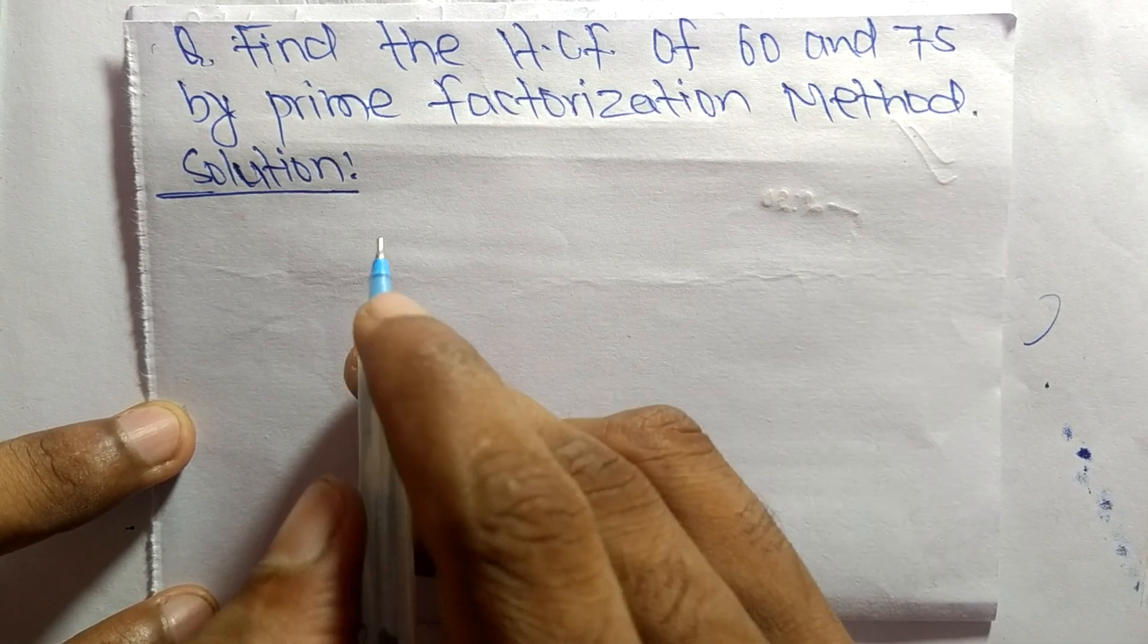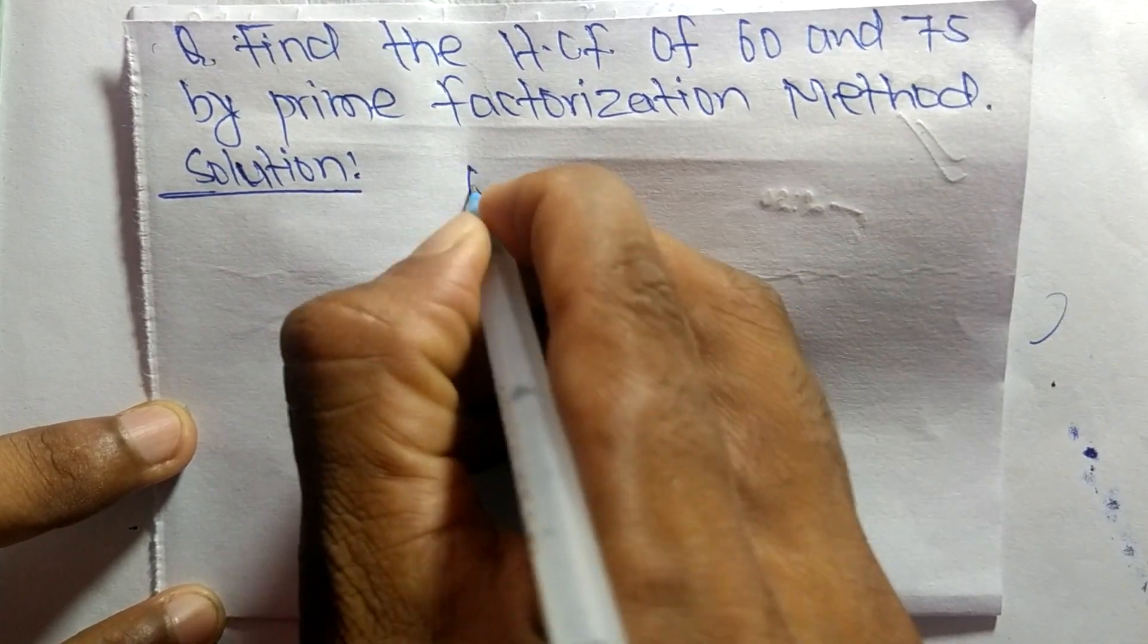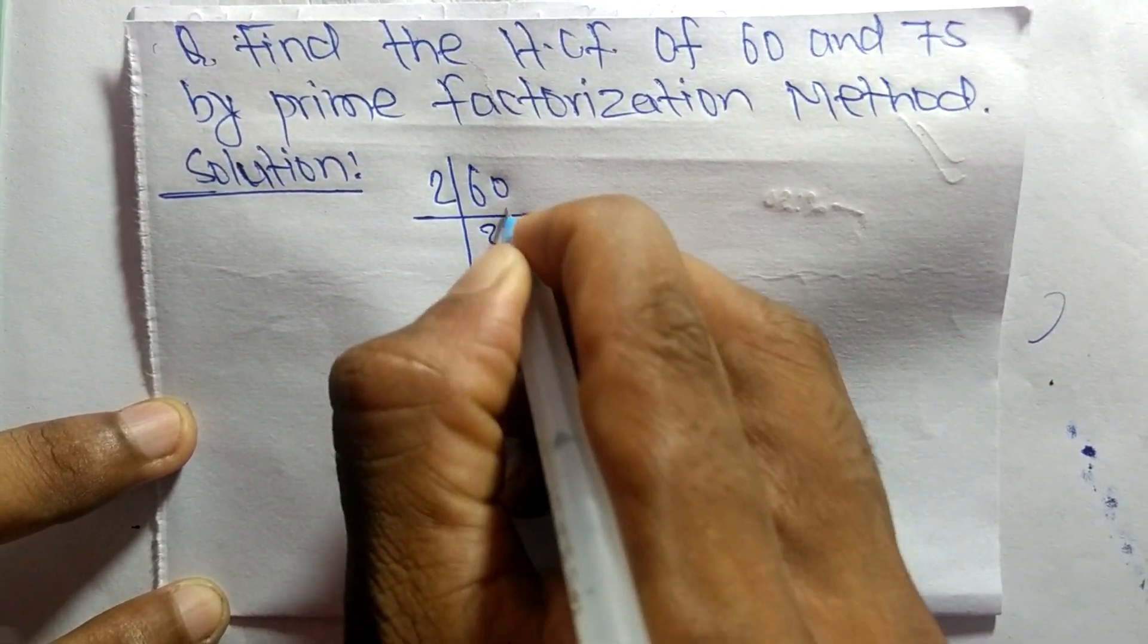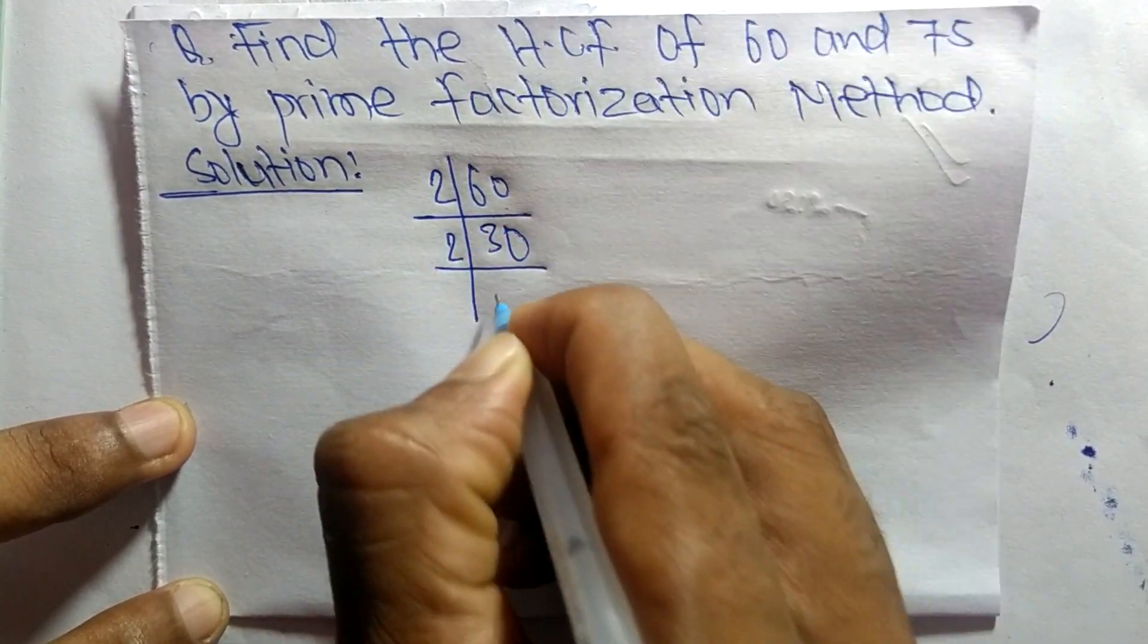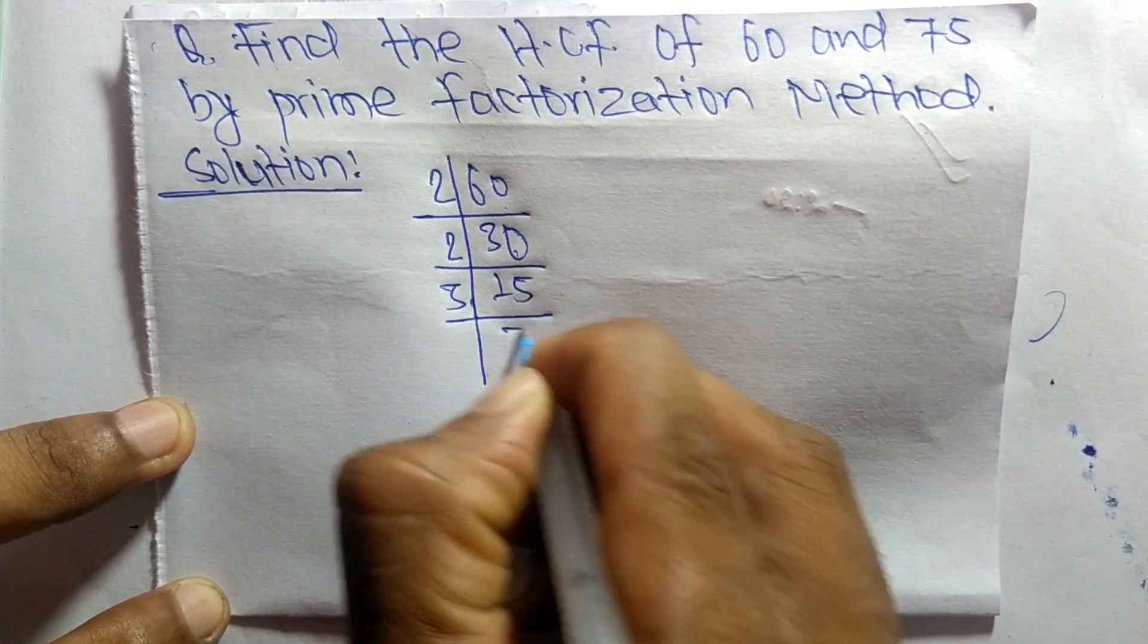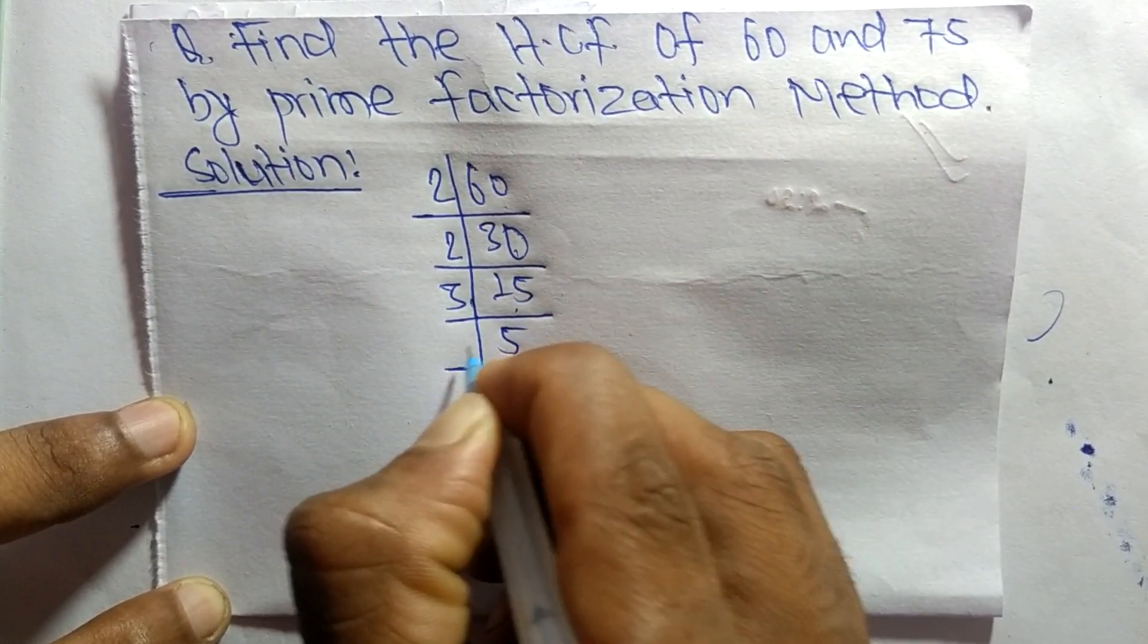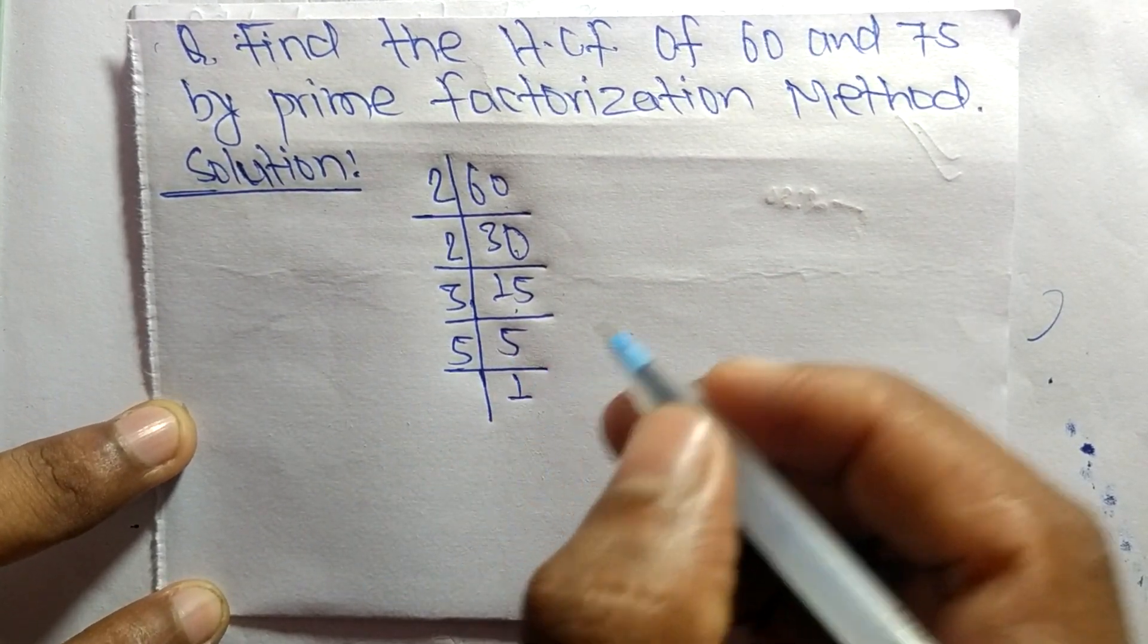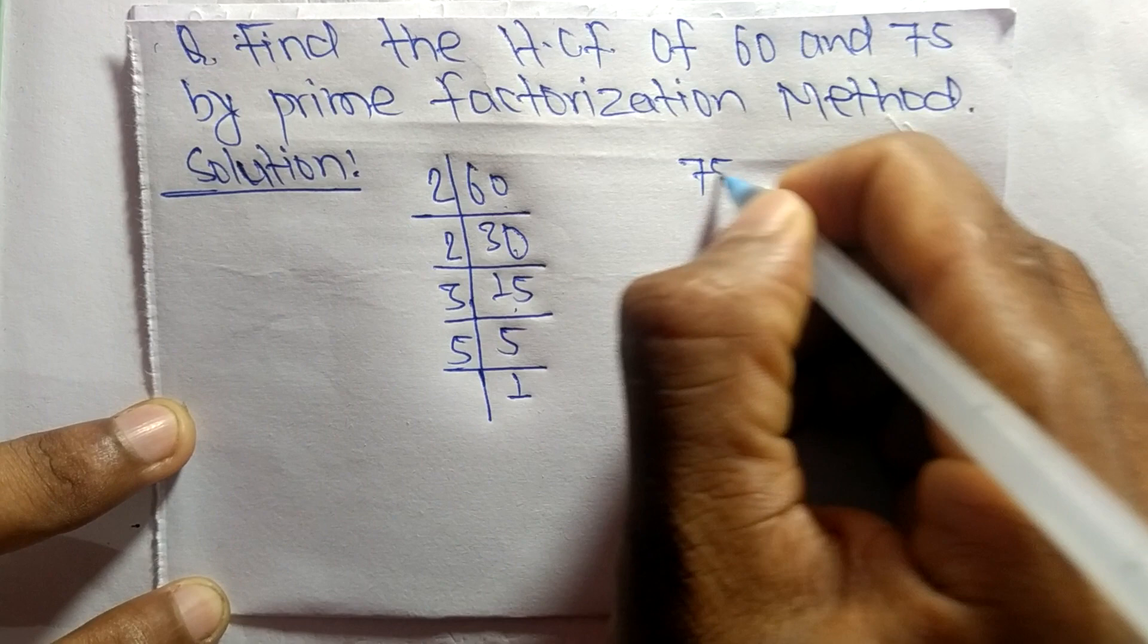So first we find out the prime factors of 60. It is 2 times 30 means 60, 2 times 15 means 30, 3 times 5 means 15, and 5 times 1 means 5.